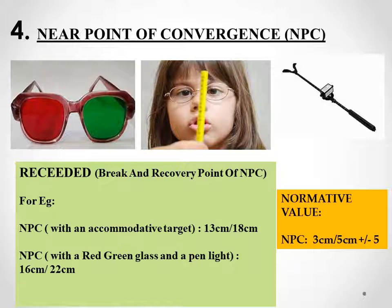PLRG will always show more receded values than NPC with the accommodative target. In the example shown, with the accommodative target the reading came 13 cm break and 18 cm recovery, and with PLRG it came 16 cm break and 22 cm recovery — which is quite receded. The normal value is 3 cm break and 5 cm recovery with a standard deviation of plus minus 5. This test strongly confirms the presence of convergence insufficiency.